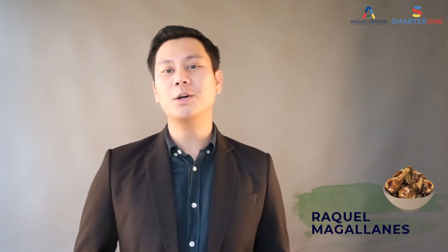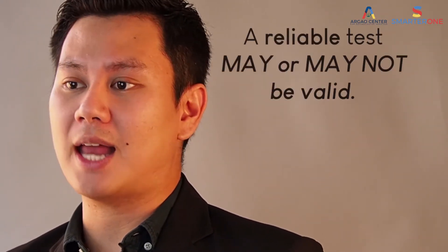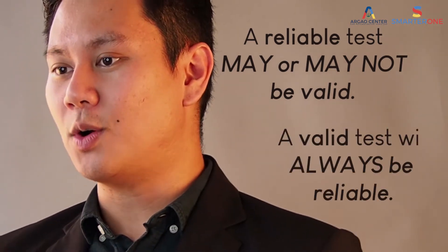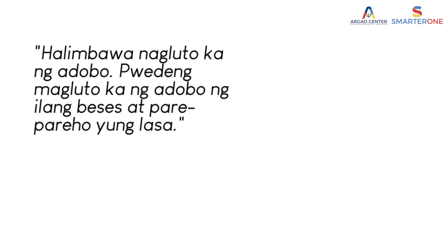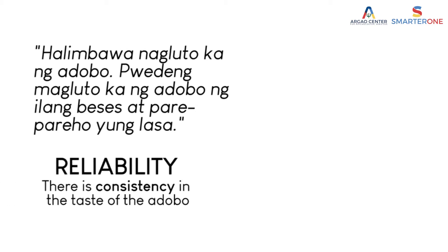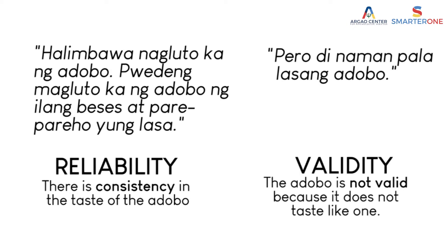The idea actually started and came from one of my former students, Raquel Magalianes, who used adobo to explain the relationship between reliability and validity. To simplify that relationship, a test that is reliable may or may not be valid, but a test that is valid is a test that is always reliable. In explaining that concept using adobo, she said: Halimbawa, nagluto ka ng adobo. Pwedeng magluto ka ng adobo ng ilang beses at pare-pareho yung lasa — that refers to reliability, there is consistency in the taste of the adobo. Pero hindi naman pala lasang adobo, which now refers to the adobo as not being valid. From there, I expanded the analogy to simplify the concepts of reliability and validity.